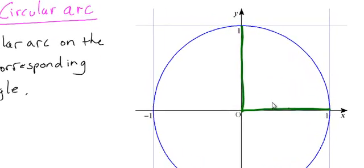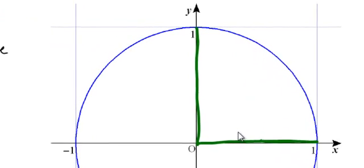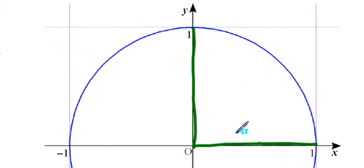Here we're asked to find the circular arc on the unit circle corresponding to a 90 degree angle. Remember, as a refresher, we always start from the positive x-axis and measure positive angles in the counter-clockwise direction. So this green line here forms a 90 degree angle.